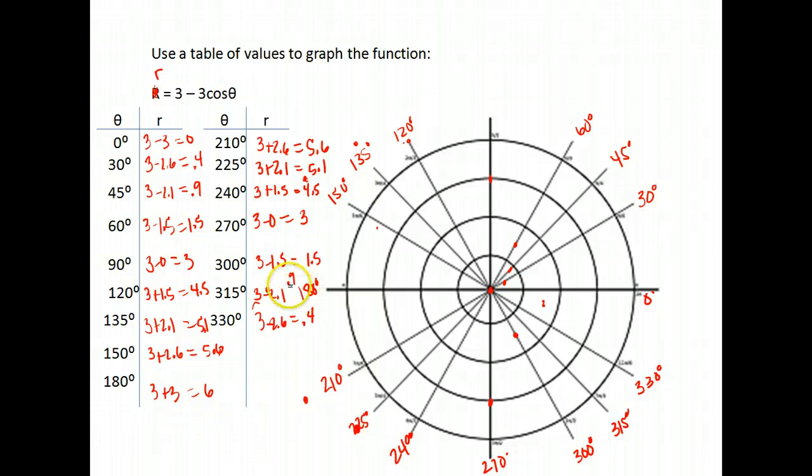315 we're at 0.9 so we open up to 315 we go out almost to 1. And at 330 we go to 0.4 so we open up to 330, 0.4 so not quite half. So you can see we get kind of a rounded heart looking shape, we connect these dots.